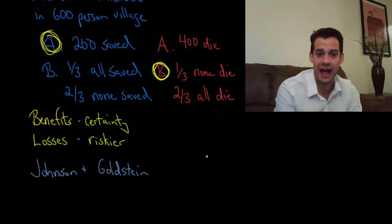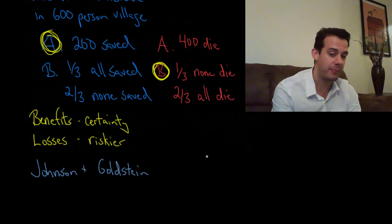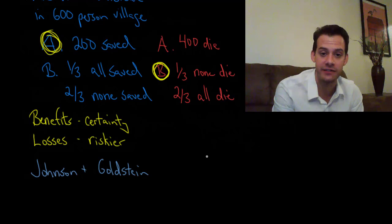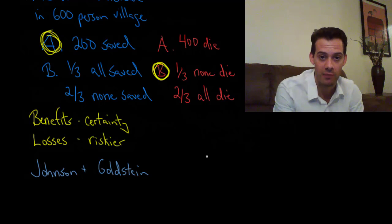And so the question is how does this influence what people choose? And the answer seems to be that if it's an opt-in program enrollment rates are lower. Countries that have an opt-in program tend to have lower rates of enrollment in their organ donation programs. Countries that have an opt-out situation where you're part of the program unless you choose not to be tend to have much higher rates of enrollment in their organ donation programs.